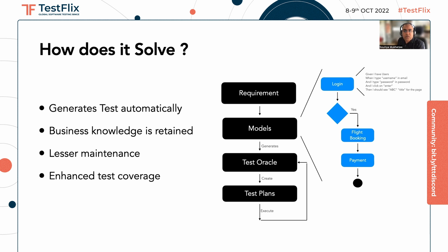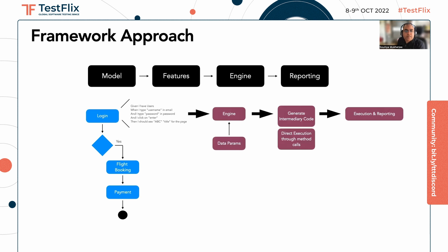How should your framework approach work? Your framework approach is the same — you have a model, it spits out the feature. What you can do is write an engine which can accept this feature and then either generate the automation test script or execute it directly. One example of a tool close to me is Karate. Karate's underlying language uses Gherkin — you can write a BDD feature and ask Karate to interpret that BDD and execute. You can have one more level by having a model which can spit out those features and then ask Karate to pick it up.